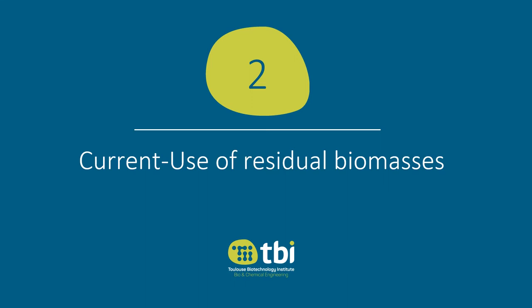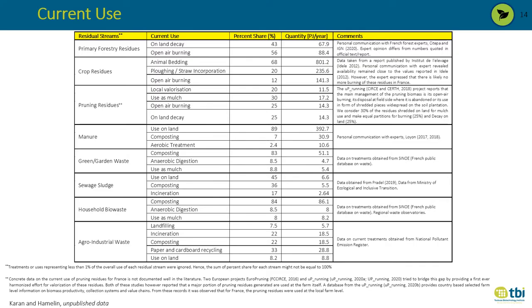Now I will talk about the second step of our framework, which deals with the current use of French residual biomass. The table shows the current use of selected residual biomass streams with their percentage share, quantity, and data sources. About 56% of the primary forestry residues are burnt in France and the remaining are left to decay; however, French forest experts suggest the portion being burnt may be significantly lower. For crop residues, about 68% is used as animal bedding, 28% is ploughed and incorporated back into the soil, and the remaining is burnt in the field.